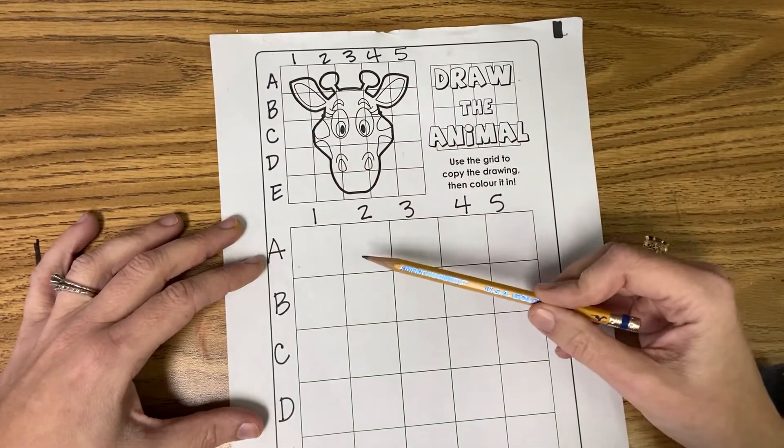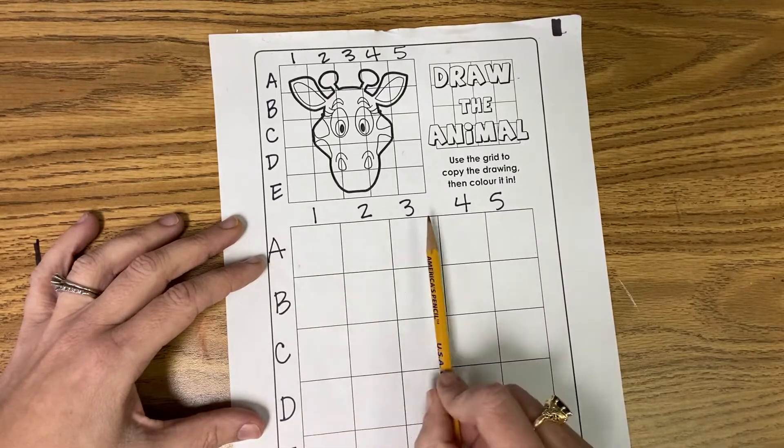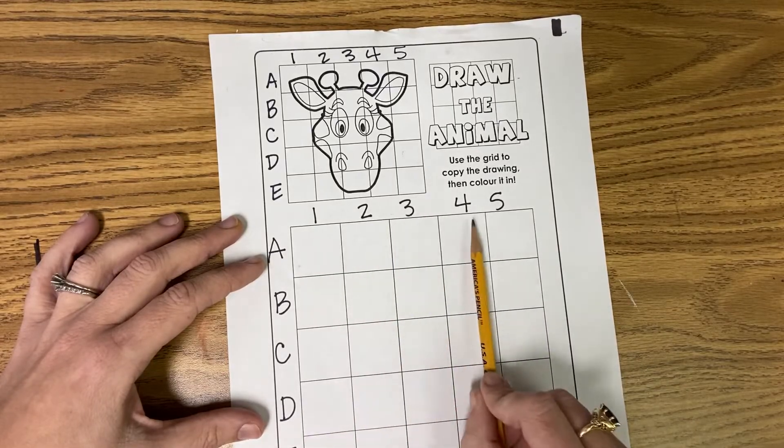And then I did the same thing down here at the bottom. Columns. Columns go up and down. One, two, three, four, five.